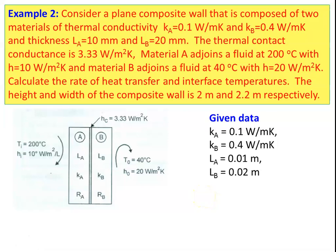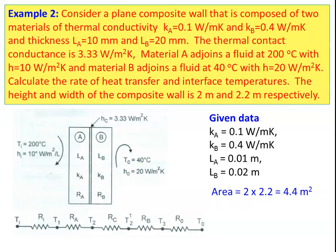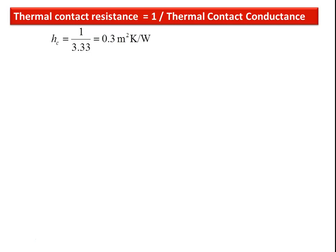Given data: KA = 0.1 W/m·K; KB = 0.4 W/m·K; LA = 0.01 m; LB = 0.02 m; area = 2 × 2.2 = 4.4 m². Always clearly read the problem, understand it, represent the data in the form of a diagram, and write down the given data — this indicates you well understand the problem. The thermal contact resistance equals 1 divided by thermal contact conductance: Rc = 1/3.33 = 0.3 m²·K/W.